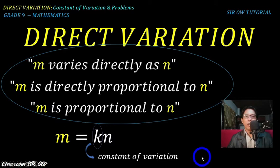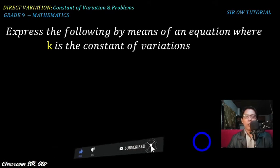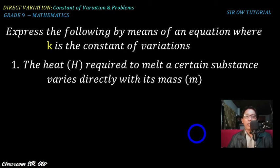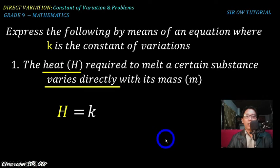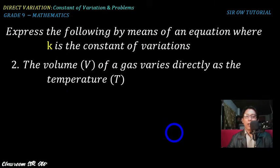Let us express the following statements as equations where k is the constant of variation. Example one: the heat h required to melt a certain substance varies directly with its mass m, so h = km. Example two: the volume v of a gas varies directly as the temperature t, so v = kt.